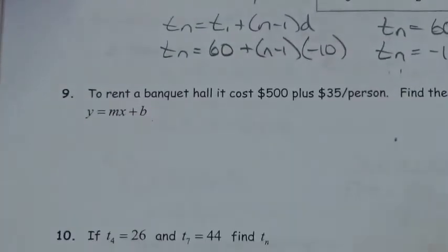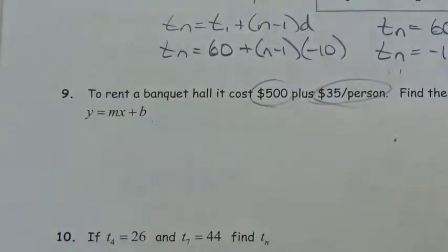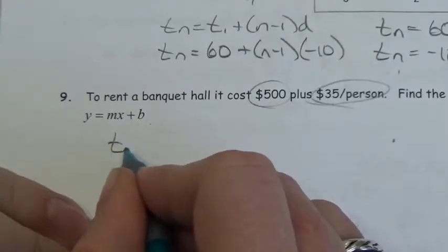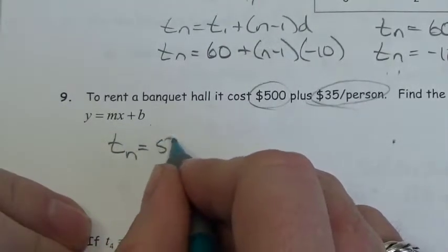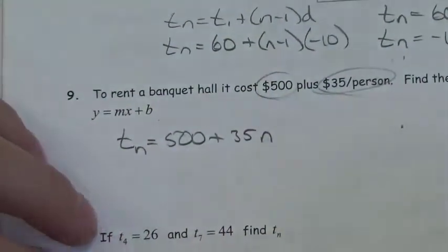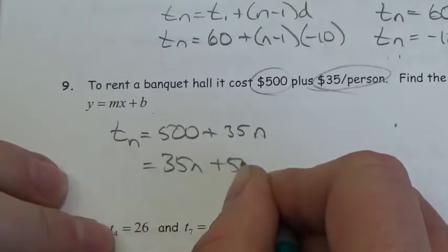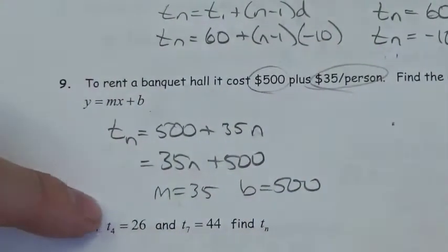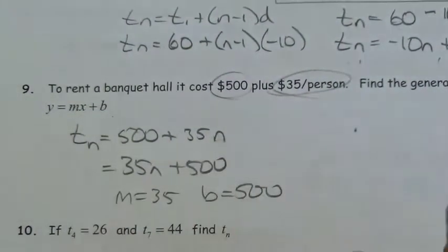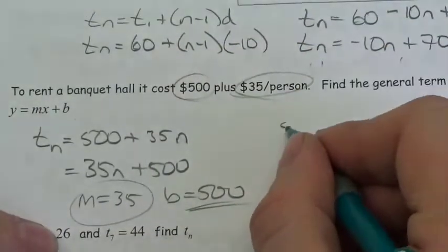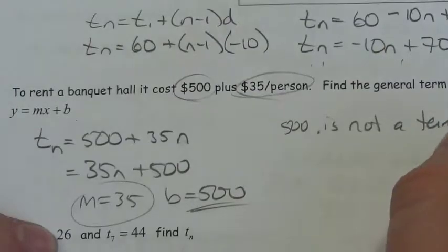Word problem: to rent a banquet hall, it costs $500 plus $35 per person. Find the general term. Tₙ equals 500 plus 35 times N, which we rewrite as 35n plus 500. Compare this to y equals mx plus b — here M equals 35 and B equals 500. However, that 500 is not actually a term in the sequence.